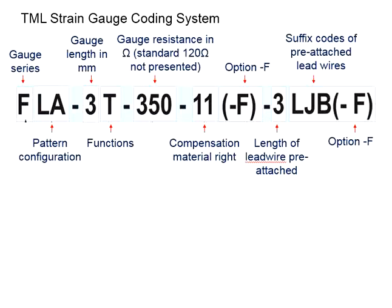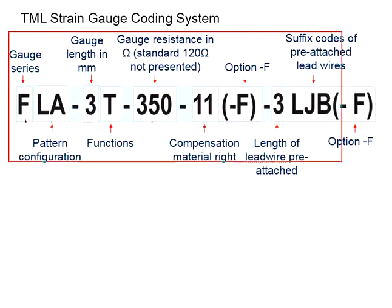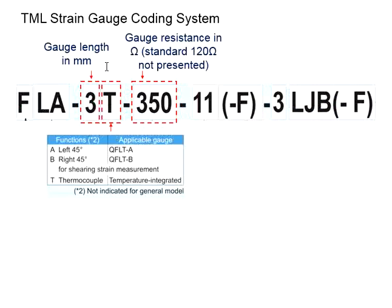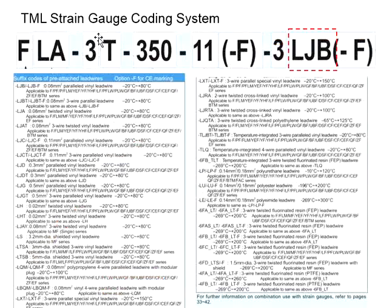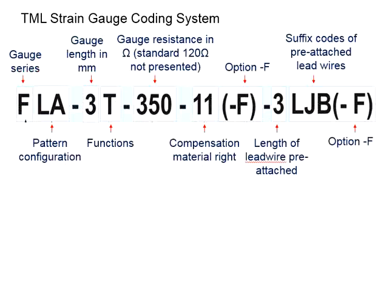In the previous videos, we discussed about the TML Stringage Coding System. The coding system carries a lot of information related to the details and specifications of the stringage. You will need to first know your purpose of testing and the applications of the stringage to decide what type of stringage you are using. Due to a wide variety in terms of these specifications, you will have to specify it in the proper coding system when ordering and purchasing the stringage.